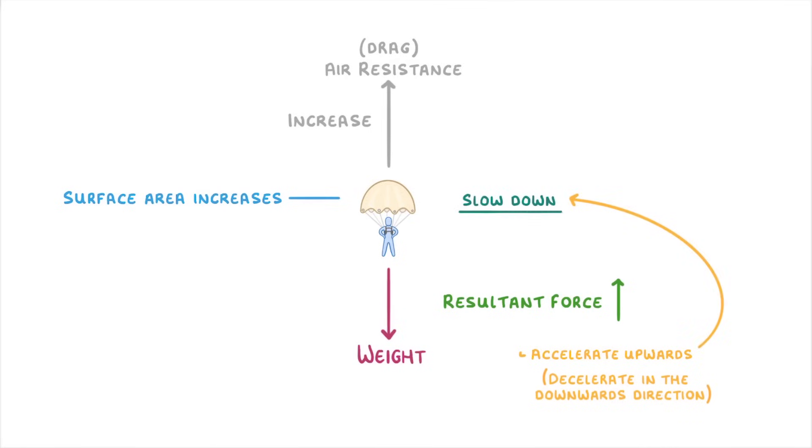The more they slow down though, the lower the air resistance will be. And so the resultant force upwards will get smaller and smaller. Until eventually, the air resistance will become equal to the weight again. At which point the resultant force will be zero. And so the person will reach a new terminal velocity.